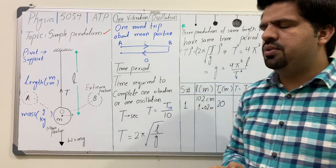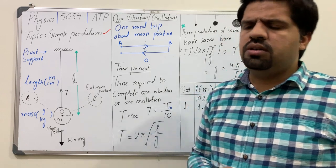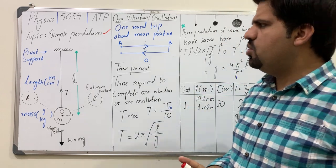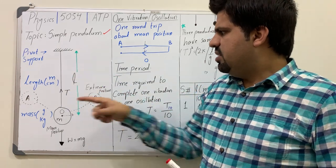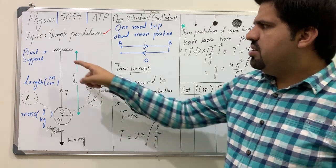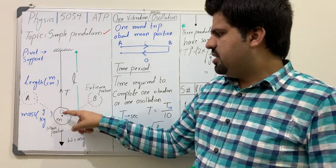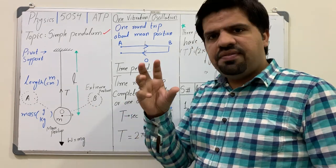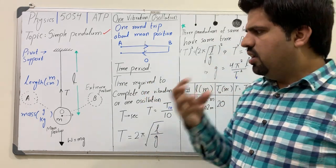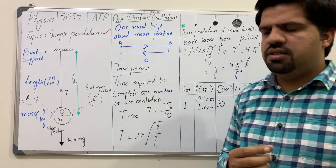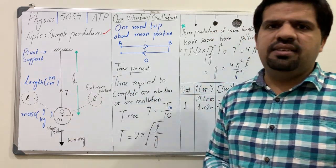A pendulum, as you are familiar with from a wall clock, consists of a thin metal string fixed from the top — that point is called the pivot or support. The second end is connected with a spherical bob. Its shape is a three-dimensional sphere. A golden-colored sphere is usually present in the laboratory, having mass m connected from one end with the bob at the other end.